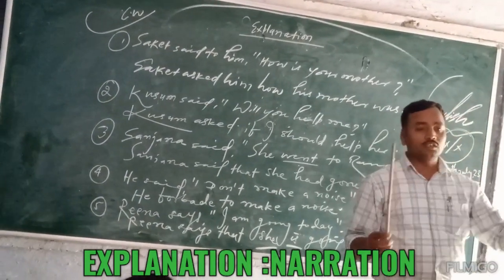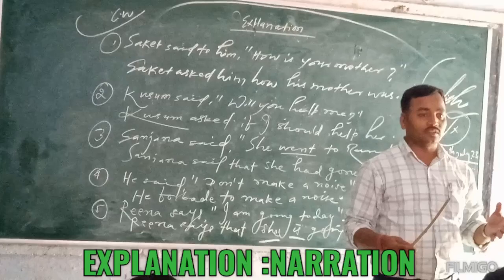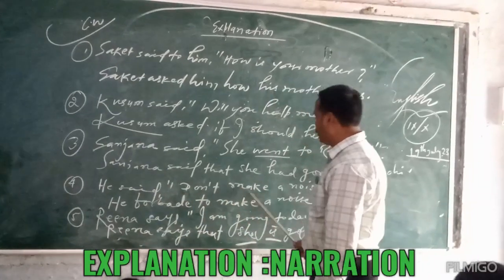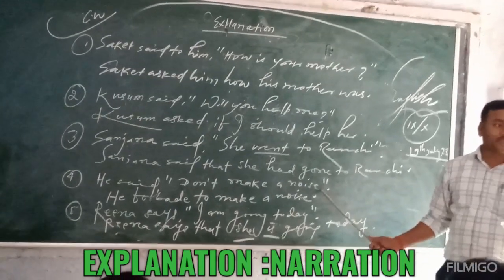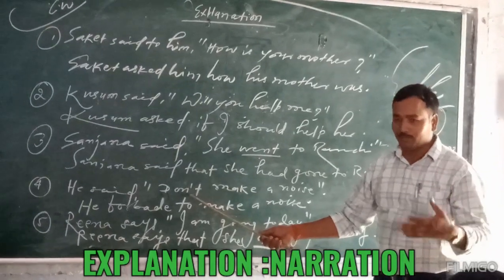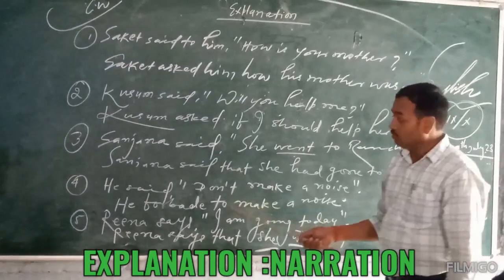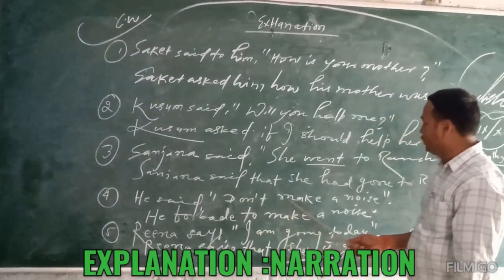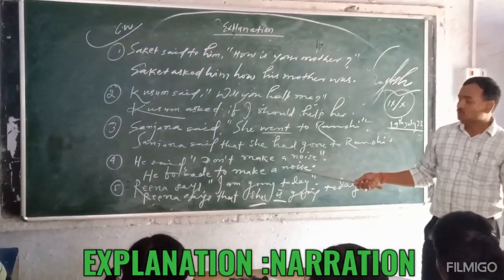I have earlier told you about some rules — how to change person, case, and tense. Now we are just doing analysis and explanation. He said, 'Don't make noise.' This is an imperative sentence following the negative form. 'Don't make noise' means we have to apply: 'he was forbidden,' 'he was stopped,' or 'he was prevented.' We apply 'forbidden.' So the result is: he forbade making noise. This is the correct answer for the direct narration transformed to indirect.